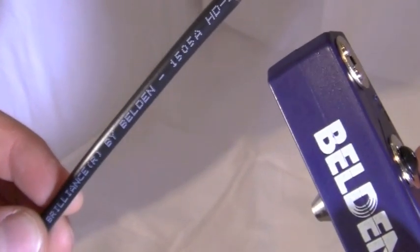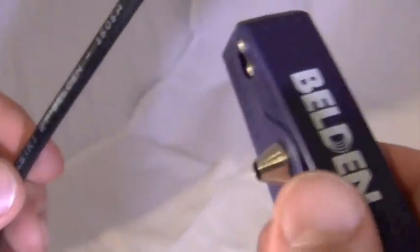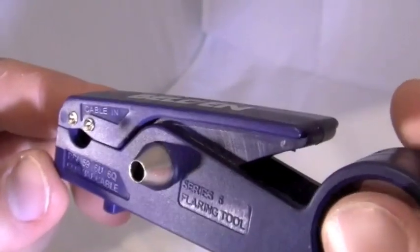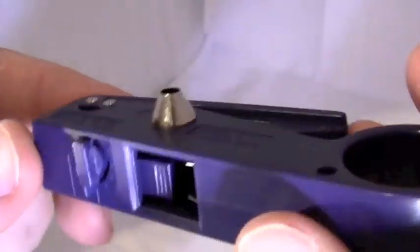Step 1, Stripping the Cable. A good prep is critical for a good installation. Using the Belden stripping tool, a perfect ¼ inch by ¼ inch prep can be achieved.